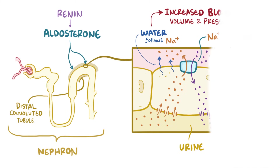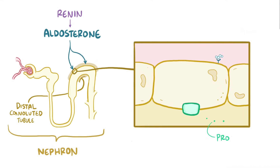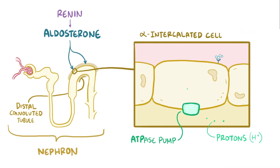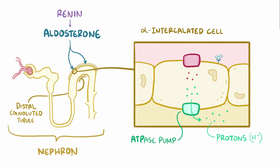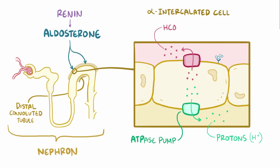The other function of aldosterone is to stimulate the proton ATPase pumps in alpha intercalated cells, which causes more protons to get excreted into the urine. Meanwhile, ion exchangers on the basal surface of the cell move the negatively charged bicarbonate ion into the extracellular space, causing an increase in pH.